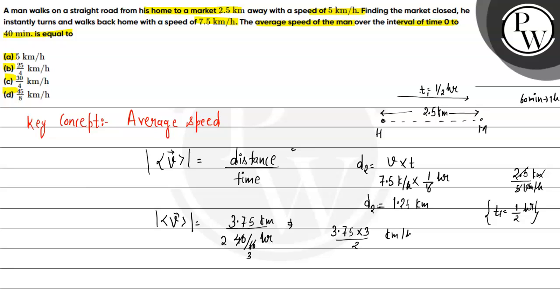So 7 by 4, 15 by 4 times 3 by 2, which gives us 45 by 8. 45 by 8 km per hour. So if we match, we consider option D, which will be the right answer. So I hope you all understood this concept. Thank you so much.